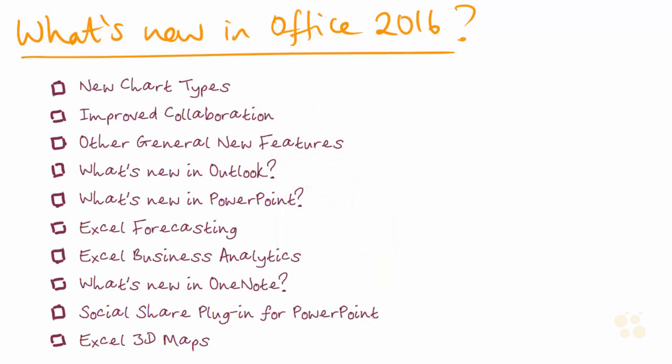Just one other thing to mention is that although I have ordered the Nuggets into a sequence which I think makes for interesting viewing, if you think to yourself, well actually I'm first of all interested in all of the Excel stuff, then that's no problem. You can watch all of the Excel Nuggets first of all and then pick up the other ones as you see fit. That would work absolutely fine.